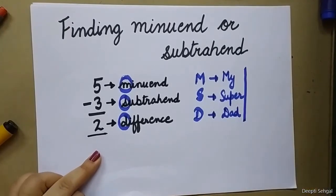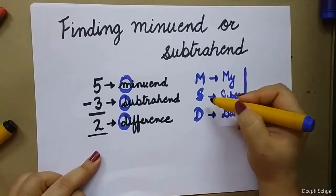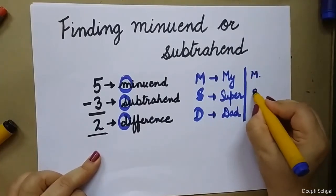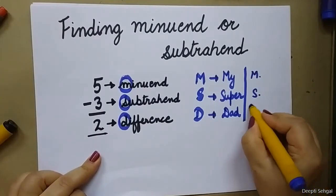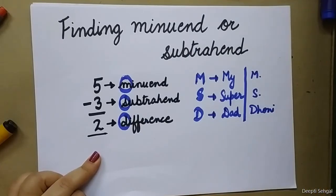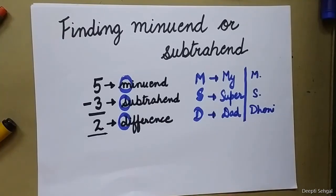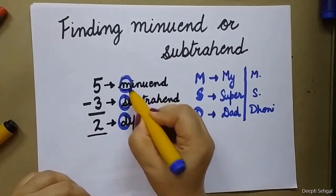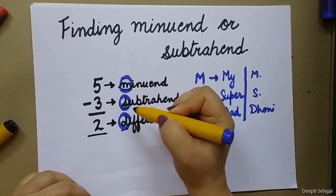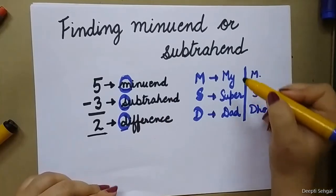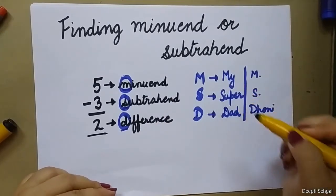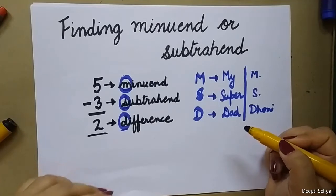Or you can remember M, S, D as 'MS Dhoni'. Yes, you got it right — MS Dhoni! There are many ways to learn things. Just think and make links in your mind, you will find out more ways. It is just that you have to think how to make it easy. M, S, D: Minuend, Subtrahend, Difference. My Super Dad. My Super Didi. My Super Dadi. Anything!